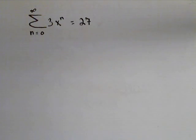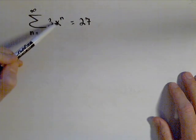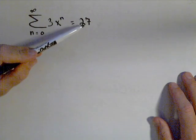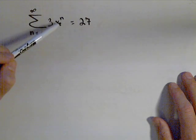So we have an interesting problem here. We have the summation from n equals zero to infinity of 3x^n equals 27. So basically, we have a geometric series here, we just don't know the common ratio. x is the common ratio, it's what we're trying to find.